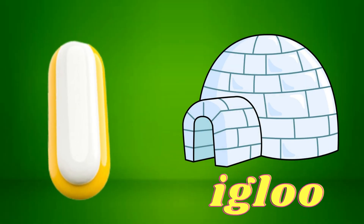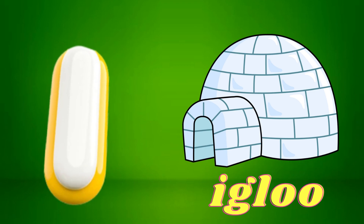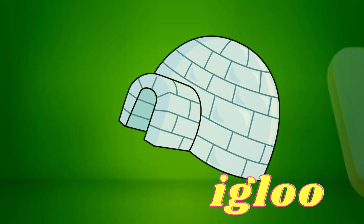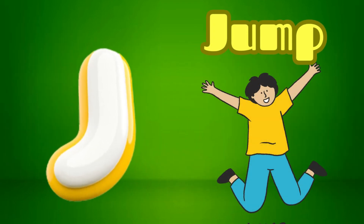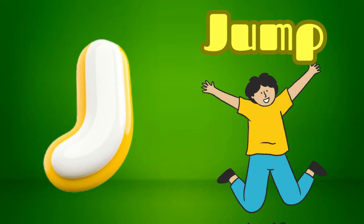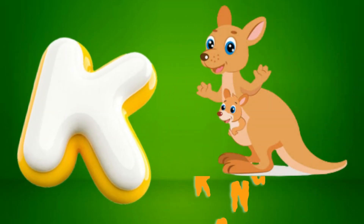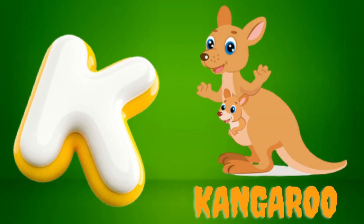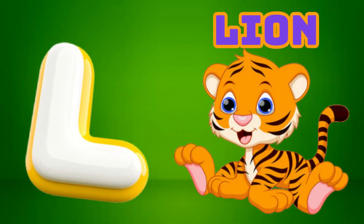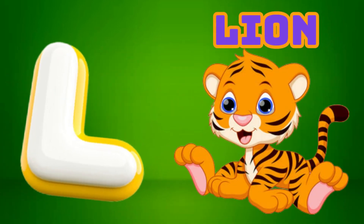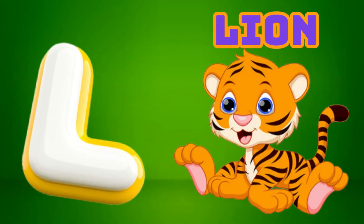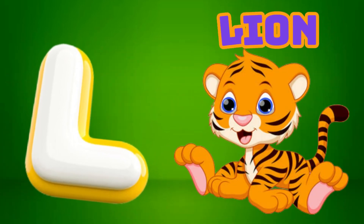I is for Igloo, I-I-Igloo. J is for Jump, J-J-Jump. K is for Kangaroo, K-K-Kangaroo. L is for Lion, L-L-Lion.